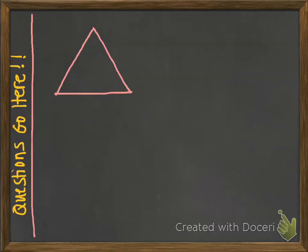First let's begin by looking at some relationships of angles in a triangle. A triangle has three interior angles — inside the triangle there are three angles. There's also something called an exterior angle. If we extend a side of the triangle, that extension along with the adjacent side creates an exterior angle because it's outside of our triangle.